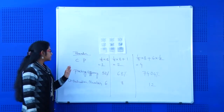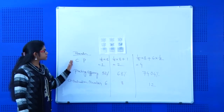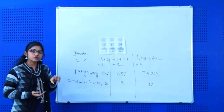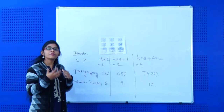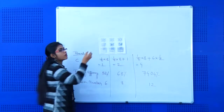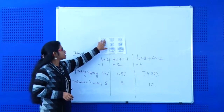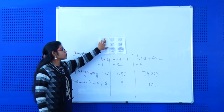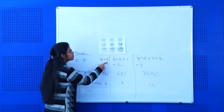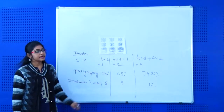Now, if we find the parameters like total number of constituent particles, packing efficiency, and coordination number — for the first, constituent particles: there are eight corners with eight constituent particles. But how many are actually inside the unit cell? If we consider one constituent particle at a corner, then one-eighth part of that particle is inside the cell. So one-eighth multiplied by eight equals one constituent particle inside the cell.